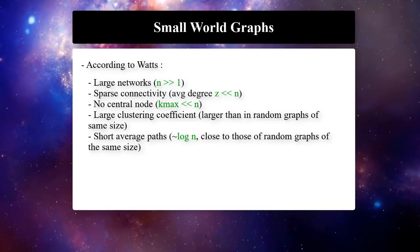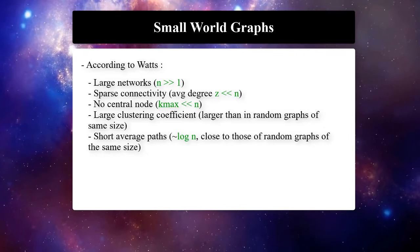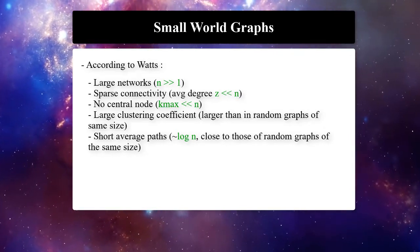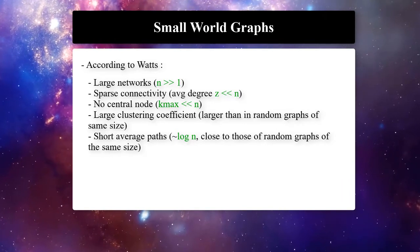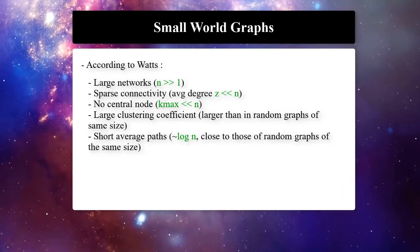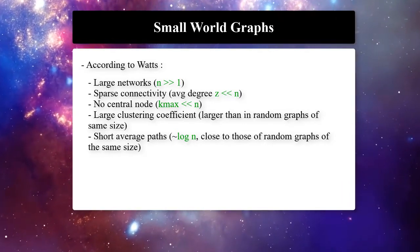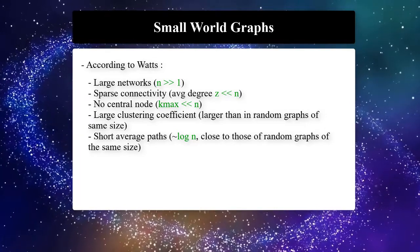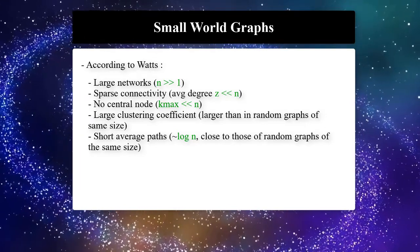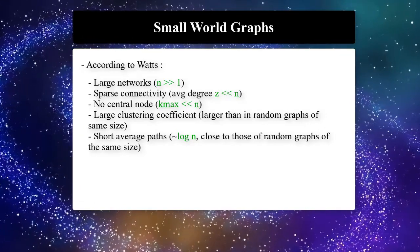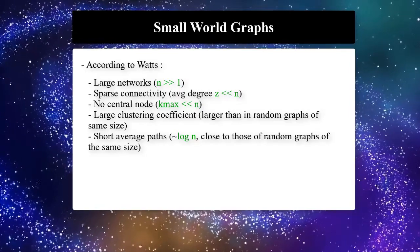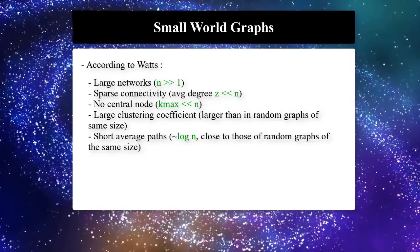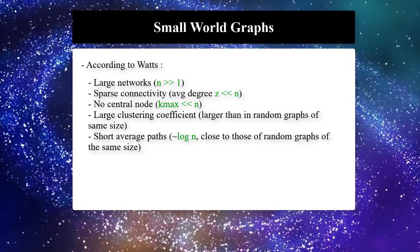Watts demonstrated that small-world properties can occur in graphs with a surprisingly small number of shortcuts. According to him, large natural networks have very sparse connectivity, no central node, but a large clustering coefficient — larger than in ER graphs of the same size — and also short average path length.